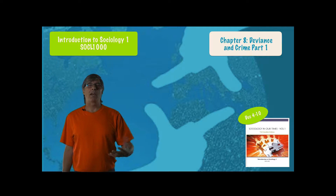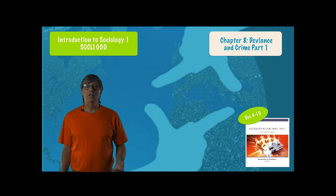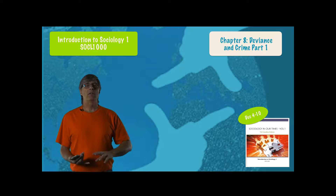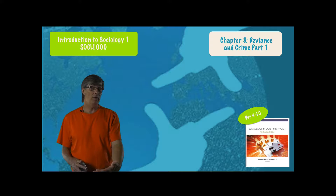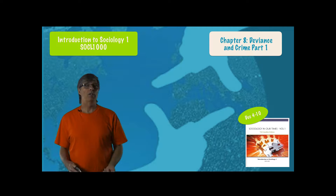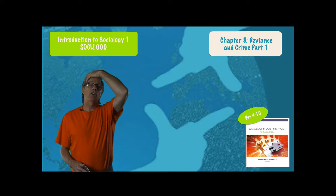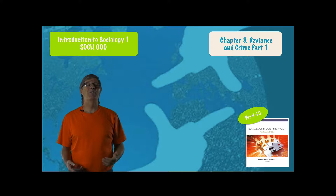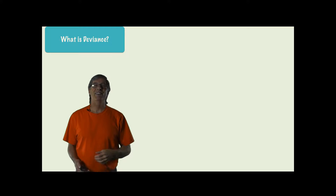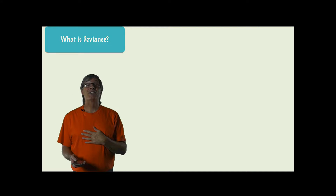What we're going to start with in this chapter is looking at the definitions of deviance and crime, what they are, and then we're going to look at the theories — how each of the theoretical groups looks at some of these issues. I'm going to review them fairly quickly. You'll find them all in your textbook. So let's get on with this.